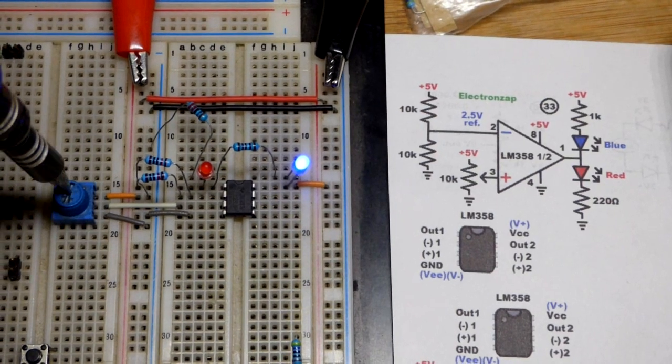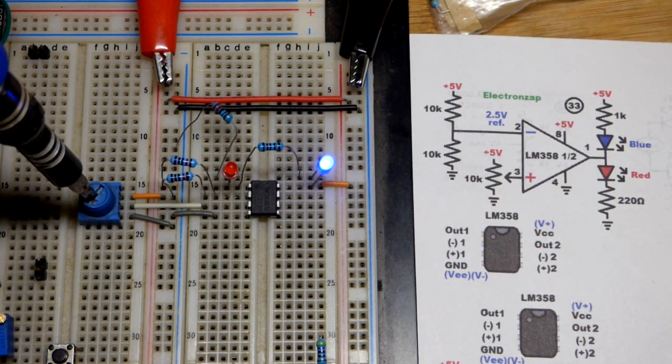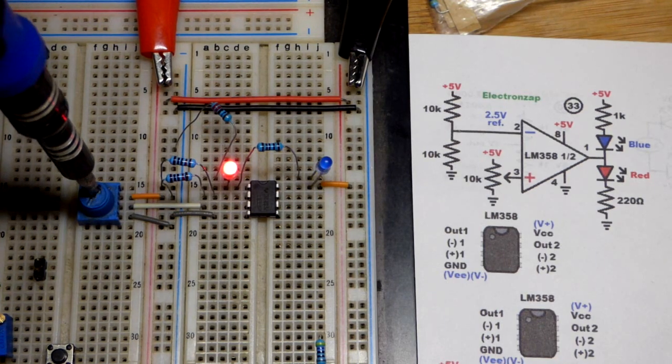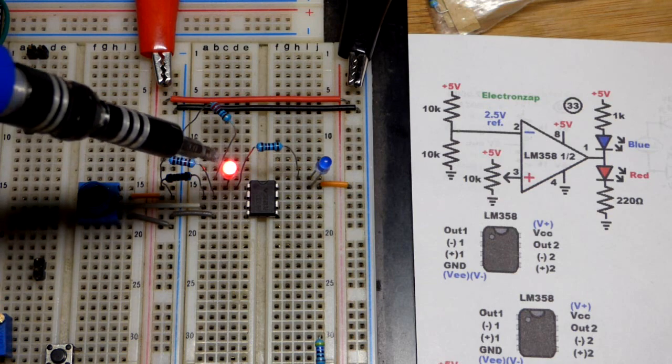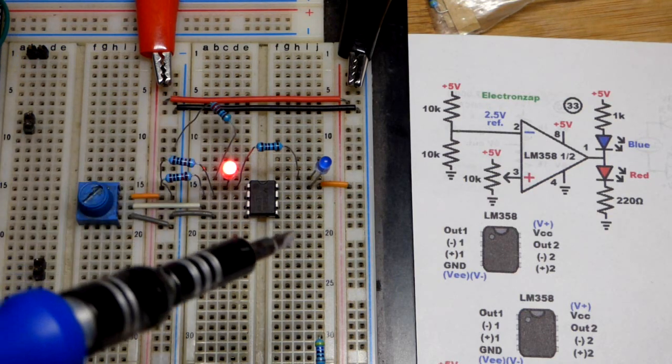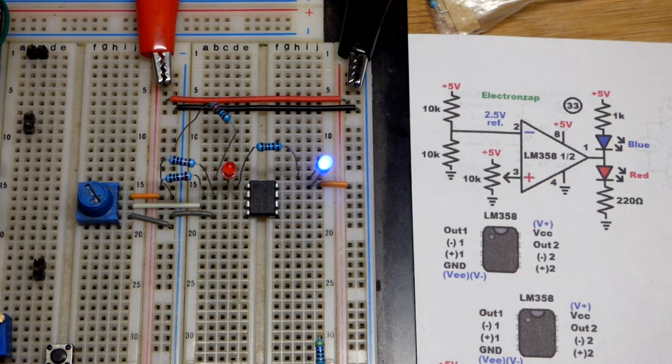So right now the trim pot is towards the negative side, closer to the negative supply than the positive supply. When we get it closer to the positive supply than the negative supply, you can see the red LED lit up. So that's how we know the output's high, because I color-coded these LEDs. When the output is low, the blue LED lights up.